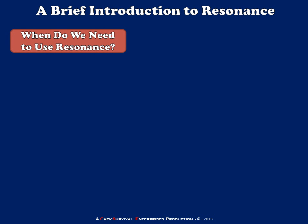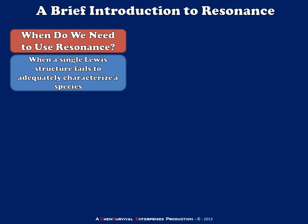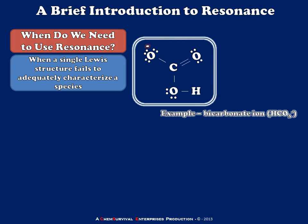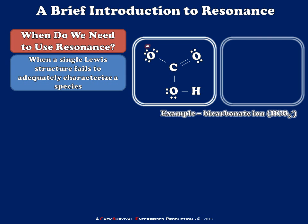When do we need to invoke resonance? The simple answer is whenever a single Lewis structure fails to adequately characterize a species — meaning a molecule or ion. A classic example is the bicarbonate ion, HCO3⁻. We can draw a duplicate Lewis structure with a quick rearrangement so the negative charge is on a different oxygen, yet the identity of the ion hasn't changed. The truth is somewhere between these two structures, so we call them resonance contributors.